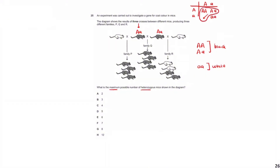Further, I'm going to assume all the offspring in family Q are also Aa, again because we want the maximum number of heterozygous. This is a valid assumption because from mating two Aa parents we can get Aa offspring — so Aa is a possibility in this cross.